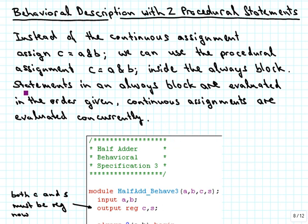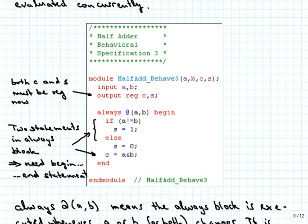One reason to do this is that statements inside an always block are evaluated in the order in which they are given, whereas continuous assignments are evaluated concurrently, or in parallel. So now this is our third behavioral specification of the half adder. The inputs are the same as before — input a, b — and the output is now such that both C and S are going to be registered, because both will be computed inside the always block. We now have two statements inside the always block: the if-else (which counts as one), and then the assignment statement c = a & b.